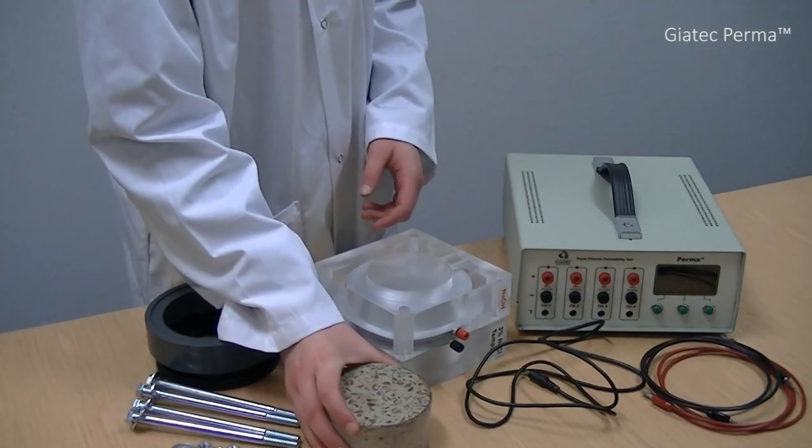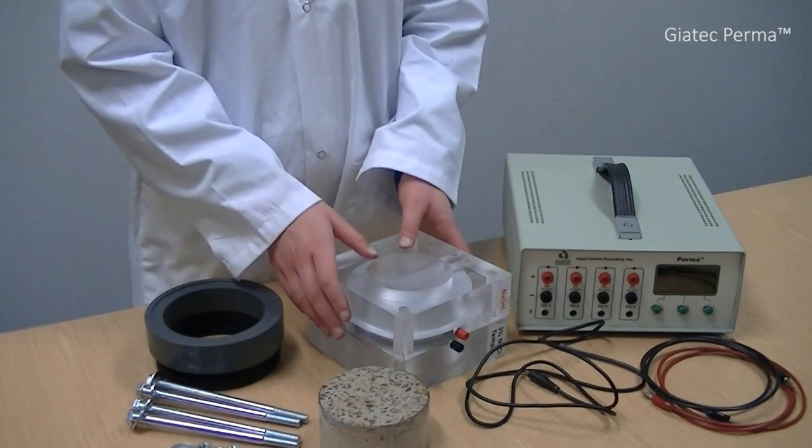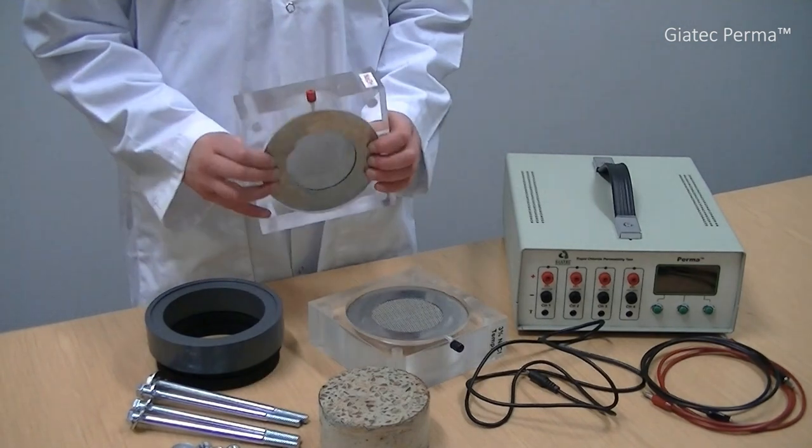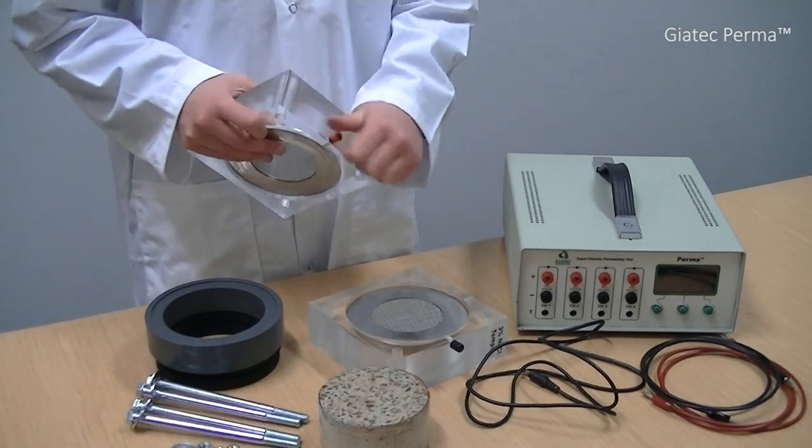Now, I'm going to show you how to set up the test cell. First, I place the stainless steel wire mesh inside each cell's cup and tighten the corresponding connector.